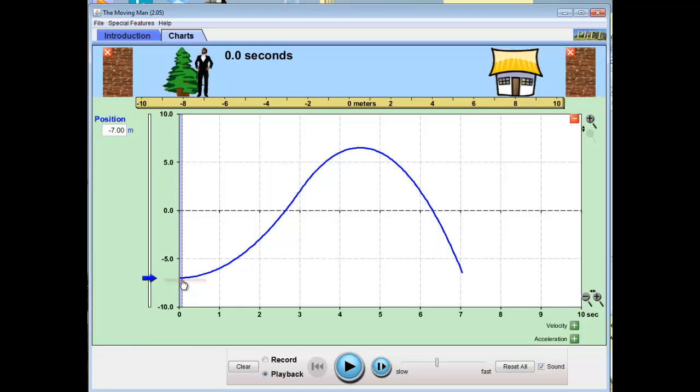Initially, our tangent line would be flat. So if I balanced a line on this right at time zero, my tangent would be roughly flat, meaning that my initial velocity starts at zero. So our man, we're assuming, starts at rest.